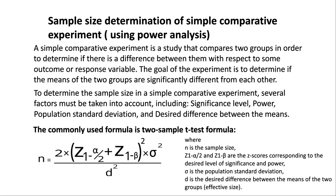Sample size determination of a simple comparative experiment using power analysis. A simple comparative experiment is a study that compares two groups to determine if there is a difference between them with respect to some outcome or response variable. The goal is to determine if the means of the two groups are significantly different. Factors to consider include significance level, power, population standard deviation, and desired difference between the means. The commonly used formula is the two-sample t-test formula.